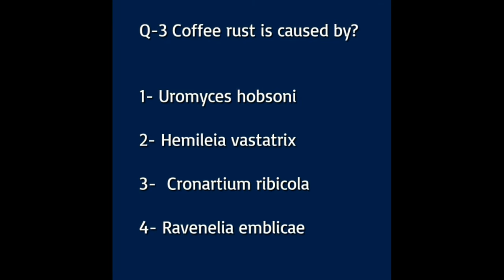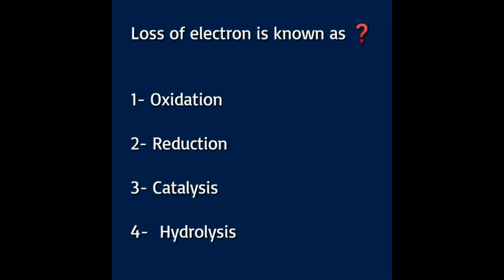Question number four: loss of electron is known as — Option A: oxidation. Option B: reduction. Option C: catalysis. Option D: hydrolysis. The answer to this question is oxidation.